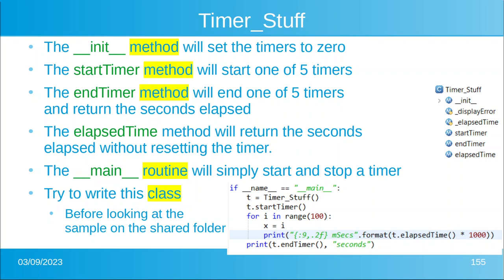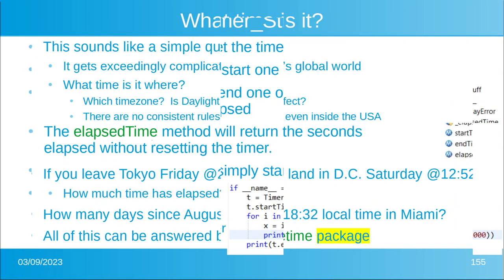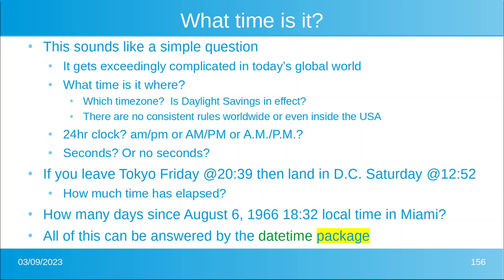The next question is: what time is it? It sounds simple, but in today's world it gets really complicated. What time is it — and where? Do you want the time here or in London? Is daylight saving in effect here and there? There are no consistent rules for daylight saving worldwide — not even inside the USA. Different states have different times for daylight saving coming in and out of effect; some states don't do it at all, like Arizona and Indiana.